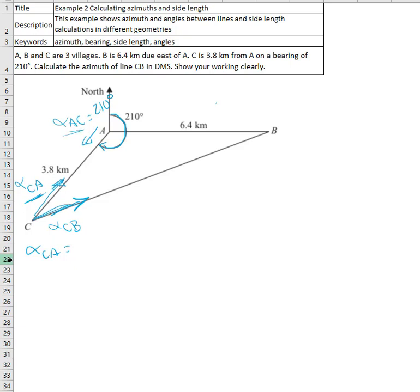Because alpha CA is more than 210, so it is 210 minus 180, so this will be equal to 30 degrees.